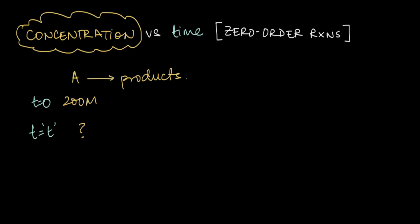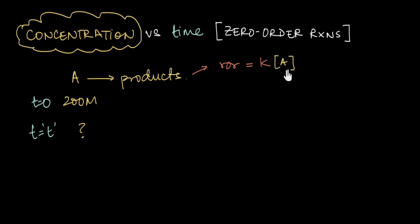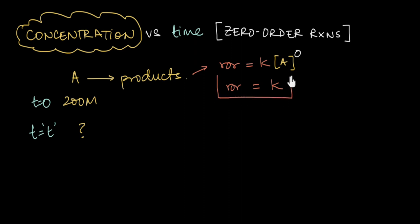Let's start by asking ourselves what exactly is a zero-order reaction. If this reaction is a zero-order reaction, then the rate of the reaction is going to be equal to the rate constant k multiplied by the concentration of the reactant raised to the power 0. This basically means that the rate of the reaction is simply equal to the rate constant k, because anything to the power 0 is equal to 1. So for a zero-order reaction, the rate of the reaction is a constant — it's equal to the rate constant k.